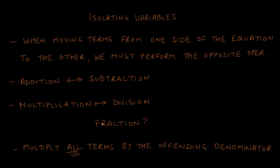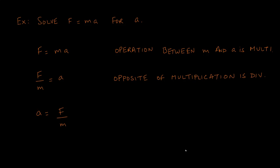Regarding fractions — students tend to be irrationally afraid of them. All you need to do is multiply all terms by the denominator. The key mistake students make is not treating the entire equation the same way — you must multiply every term by the offending denominator, not just some terms. 'Offending' is just a half-joke, not a mathematical term.